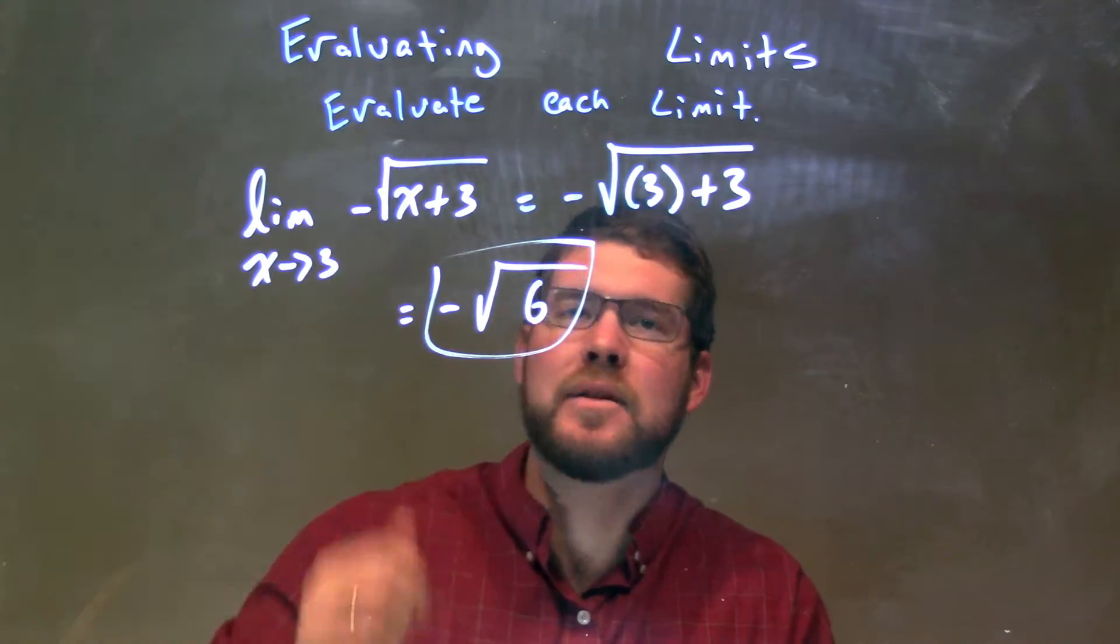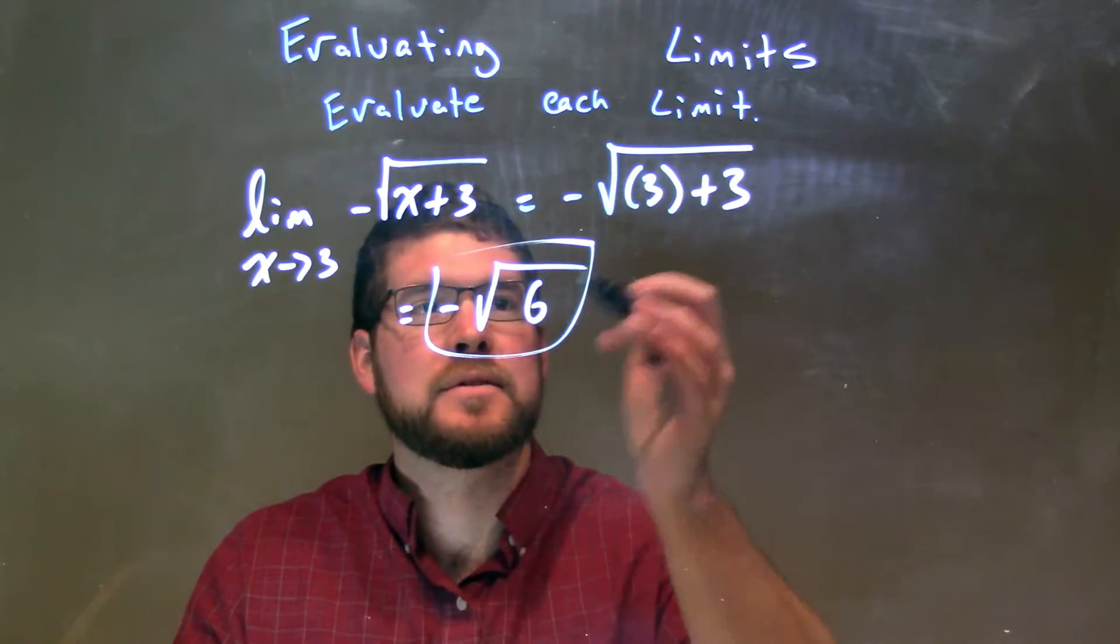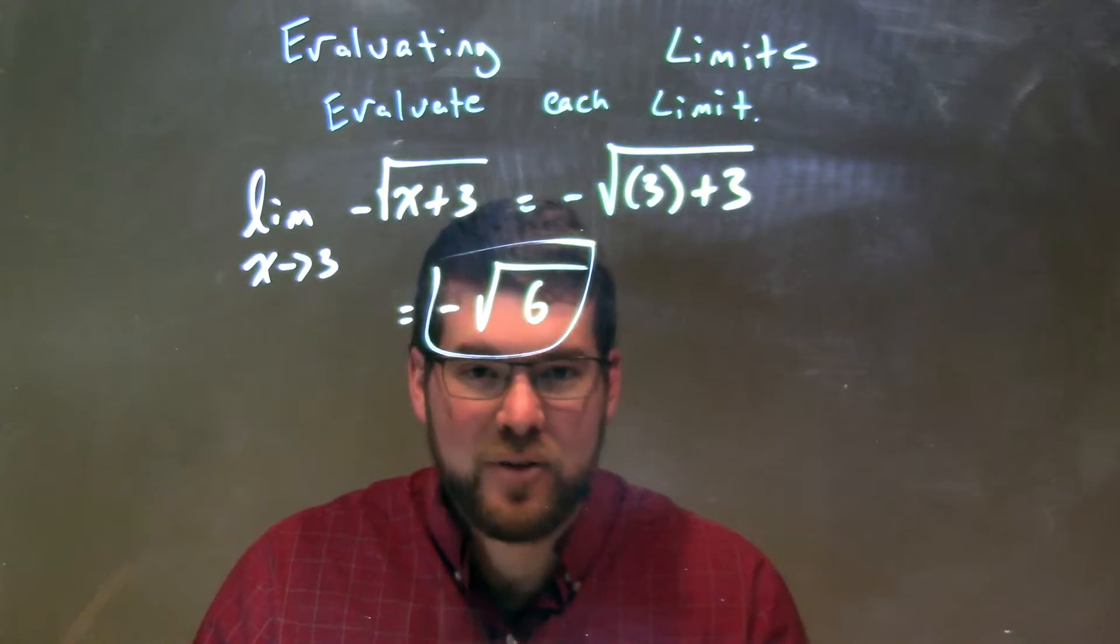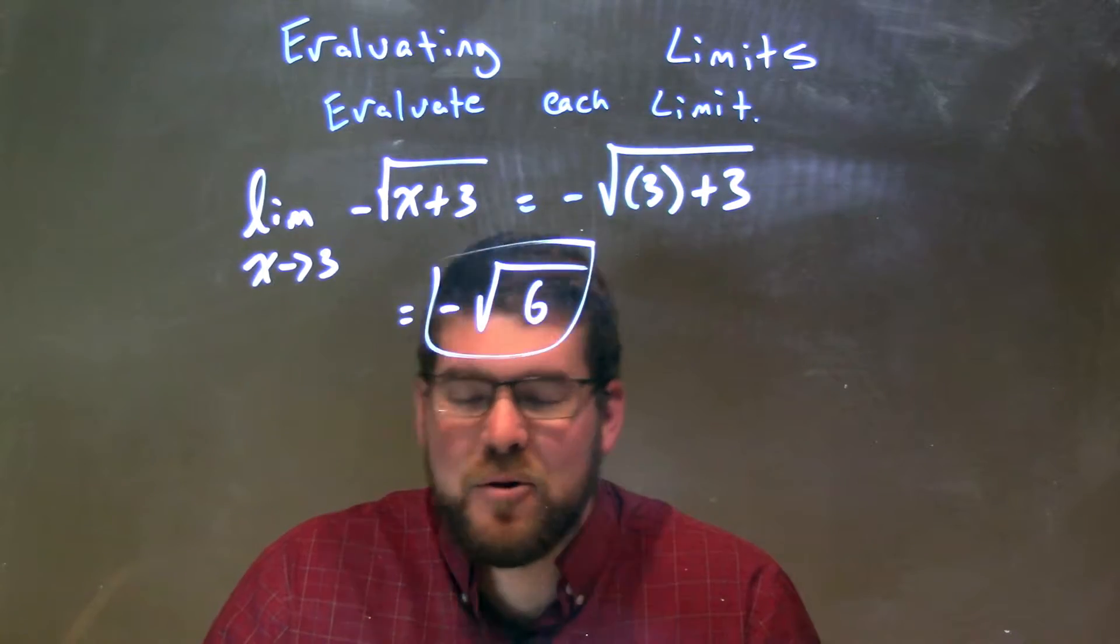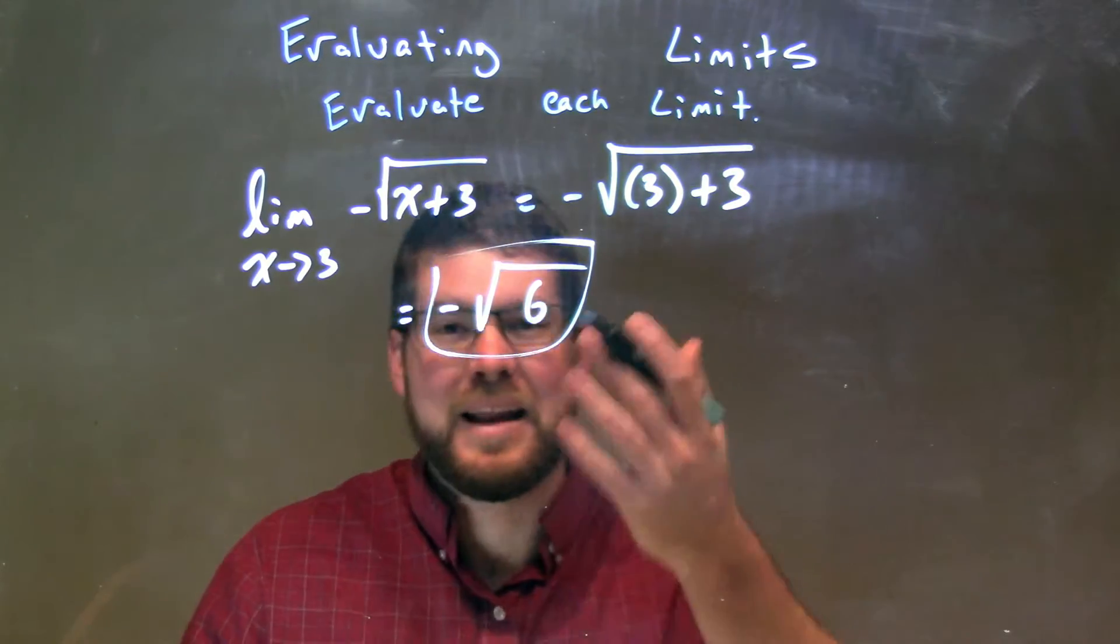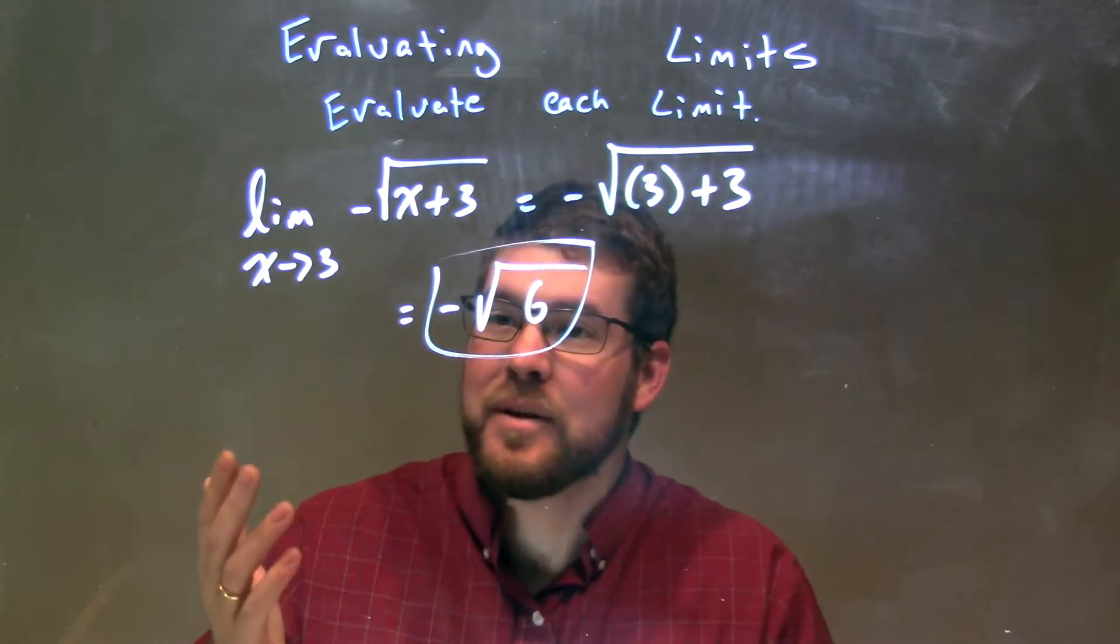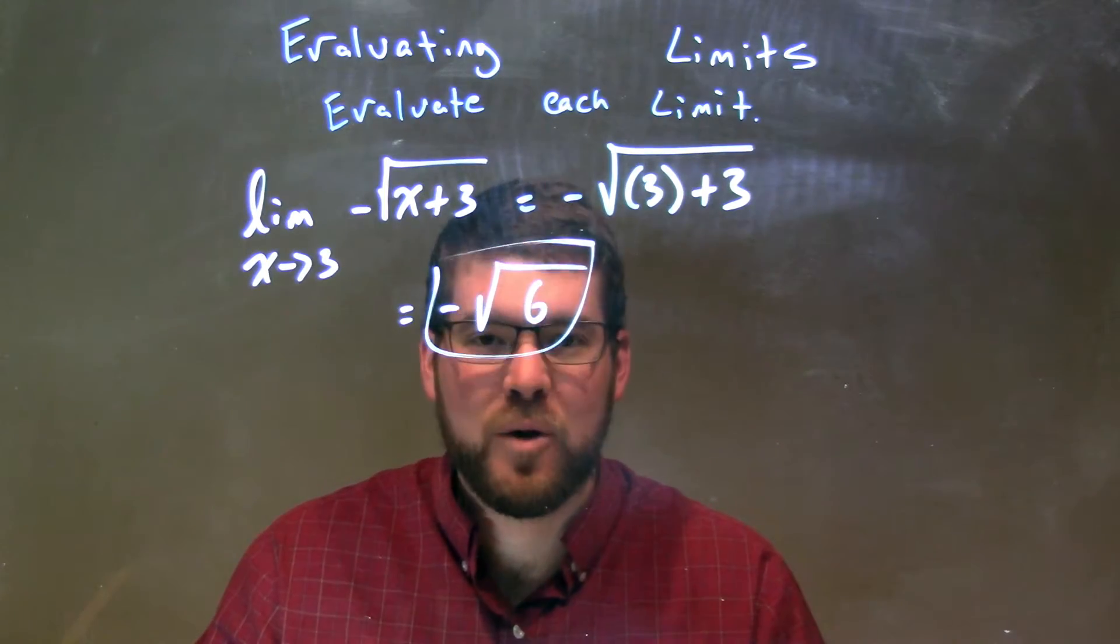So we can plug 3 directly in for x. 3 plus 3 is 6. We can take the square root of 6 with a negative on the outside. There's nothing else we can simplify. We can always make it a decimal, but this is more neat. So our final answer for this limit is negative square root of 6.